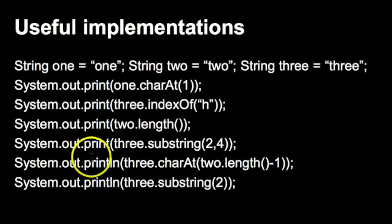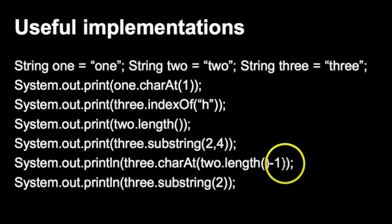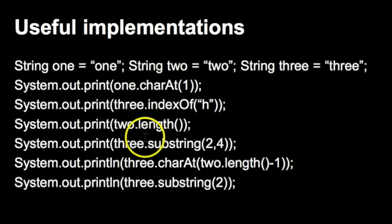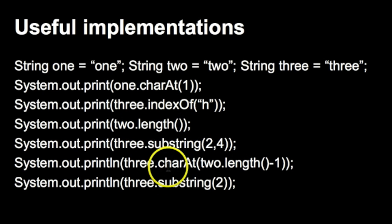The next print statement says three.charAt(two.length() - 1). Keep in mind that length minus 1 is something you'll see a lot, because you can't do charAt(two.length()) — that gives an error, since length counts from 1 but elements start at 0. two.length() is 3, subtract 1 gives 2. So this is three.charAt(2), and going through 0, 1, 2 in 'three', this will print 'r'.